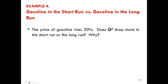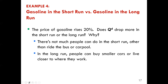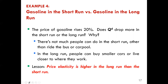Our fourth example compares the quantity of gasoline in the short run versus the long run. The price of gasoline rises by 20 percent. In the short run, there's not much people can do other than ride a bus or carpool. In the long run, however, people can buy smaller cars or live closer to work. The lesson: price elasticity is higher in the long run than in the short run.